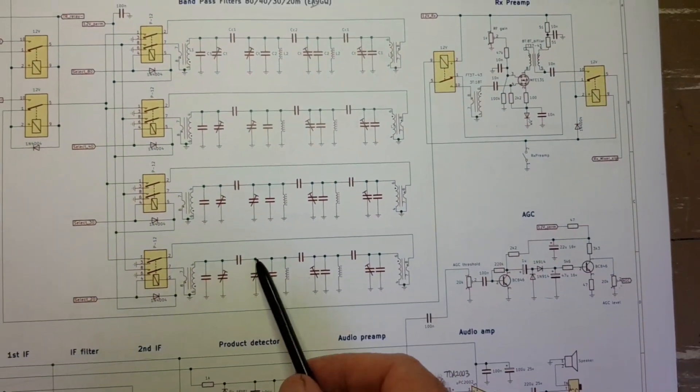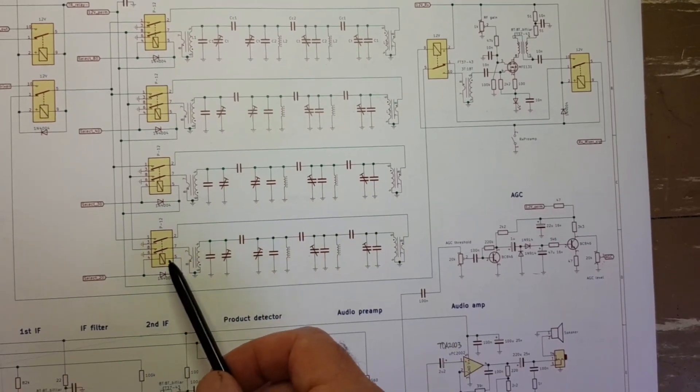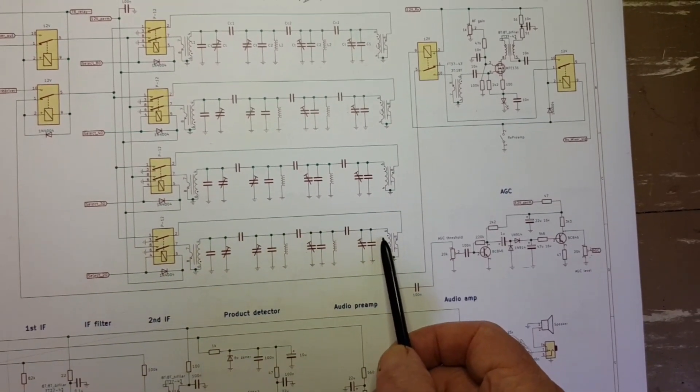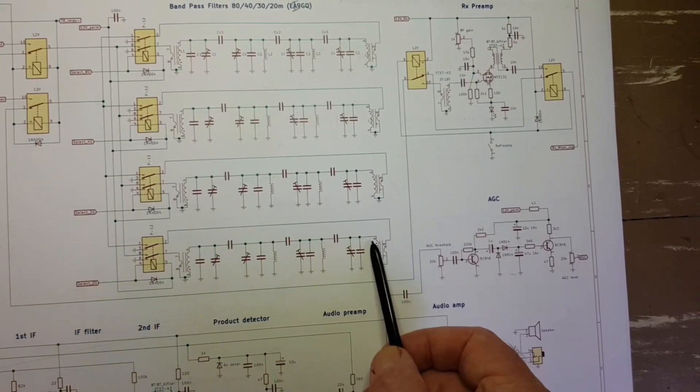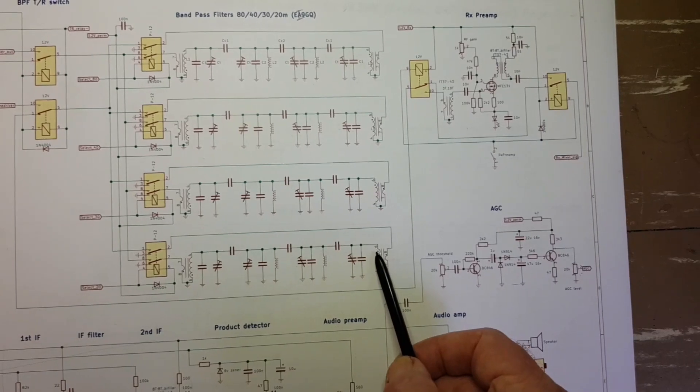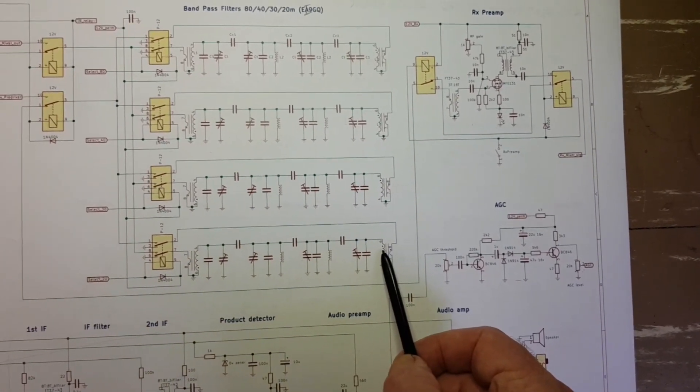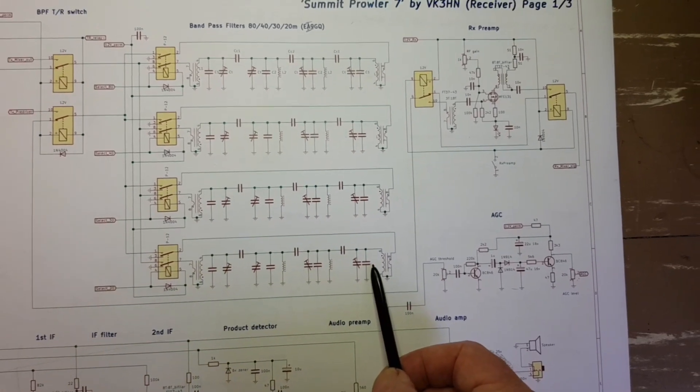These bandpass filters have four poles. Each pole is trimmed, and as a result you get a good two to four hundred kilohertz flat bandpass and an excellent out-of-band rejection. So I found these to be easy to make and easy to tune, and they work very well.